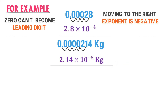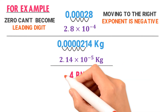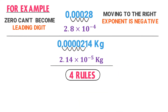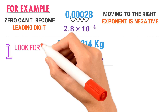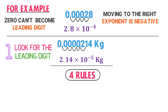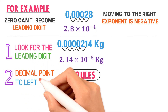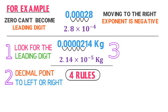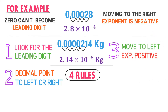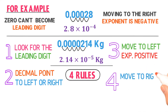So far we have learned four rules of scientific notation. First: always look for the leading digit. Second: shift or move the decimal point either to the left or to the right. Third: if the decimal point is shifted to the left, the exponent will be positive. Fourth: if the decimal point is shifted to the right, the exponent will be negative.